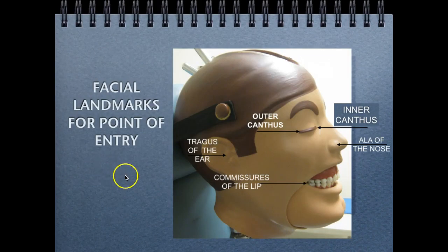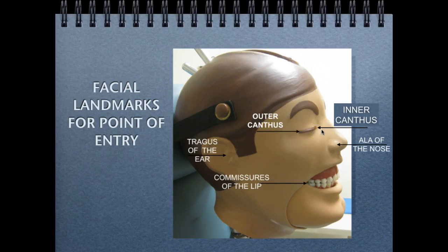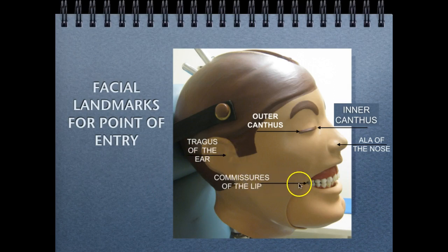Whether we're using an XCP or the bisecting technique, let's review the facial landmarks for what textbooks call the point of entry — how we align the PID to the teeth and image receptor. For bite wing images, we use the facial landmarks of the eye: the outer canthus and the inner canthus. As we progress, we'll also use the tragus of the ear, commissures of the lip, and the ala of the nose, but for bite wings we primarily use the outer and inner canthus.